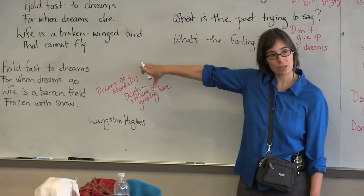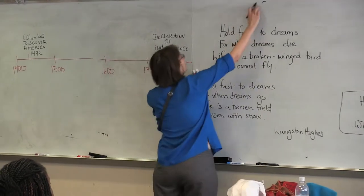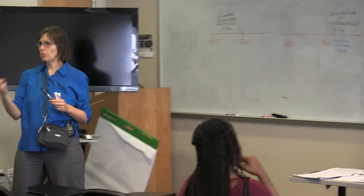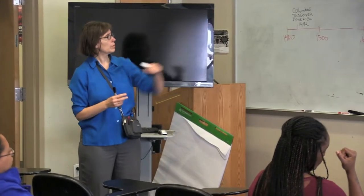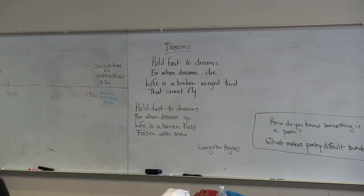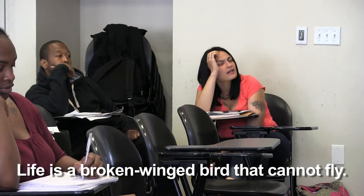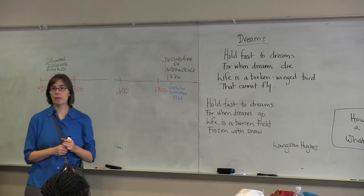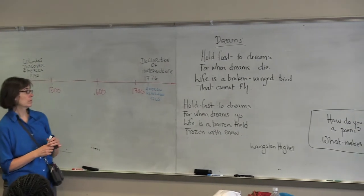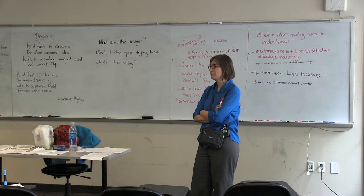But you also want students to have some familiarity and comfort with it. Can someone read the first stanza? This is called a stanza. "Hold fast" — it means not giving up, hold on. Can someone read the second stanza? "Hold fast the dreams, for when dreams go, life is a barren field frozen with snow." So what pictures are you getting from this poem? What mental images is the poet giving you?